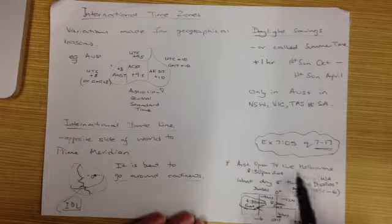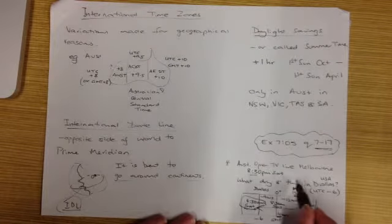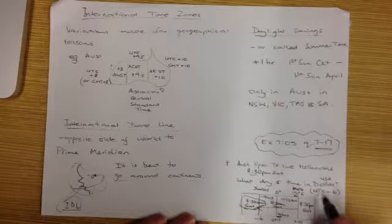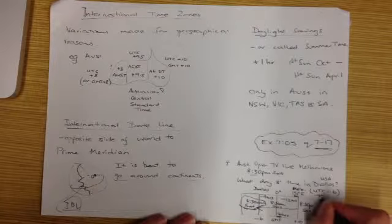The Australian Open was live on TV in Melbourne at 8:30 PM on a Saturday. What day and time would it be in Dallas in the US? So there, UTC minus 6, which another word, remember, is GMT minus 6.